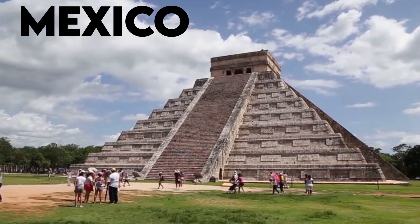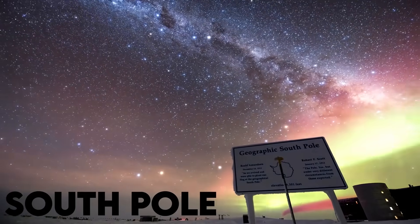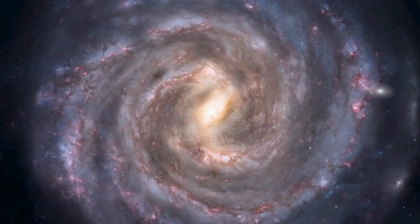Eight observatories in Mexico, Hawaii, Arizona, Chile, Spain, France, and the South Pole aimed their eyes into the sky and stared at M87.